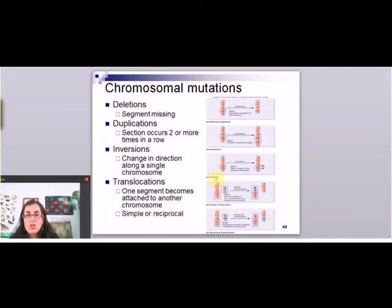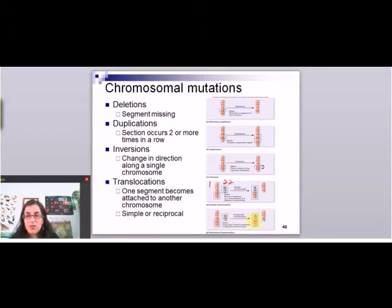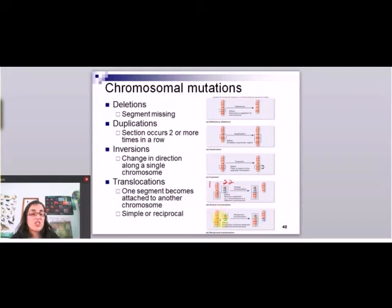A translocation moves information from one chromosome to a different chromosome. So imagine this is chromosome 1 and this is chromosome 22 — a piece of 1 is going to be stuck onto 22, or in this case it's a switch where they each end up with a piece of the other. This one now has parts of chromosome 1, and this one has parts of 1 and 22 as well. Because it's now in a different location, it's going to change gene expression, so all of these have the potential to have a huge impact on the organism.